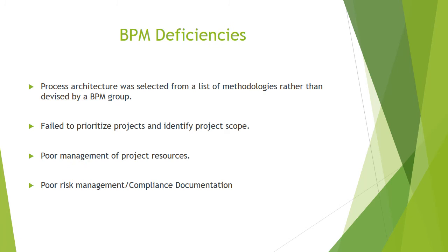Some of their activities that did not coincide with BPM group activities: the process architecture was selected from a list of methodologies rather than being devised by the BPM group themselves. They also failed to prioritize projects and identify project scope. There was also poor management of project resources, which led to multiple projects being run concurrently with different methodologies running simultaneously. There was also poor risk management as they rolled it out in stages, starting with a few projects and then increasing. And there was no mention of compliance documentation.